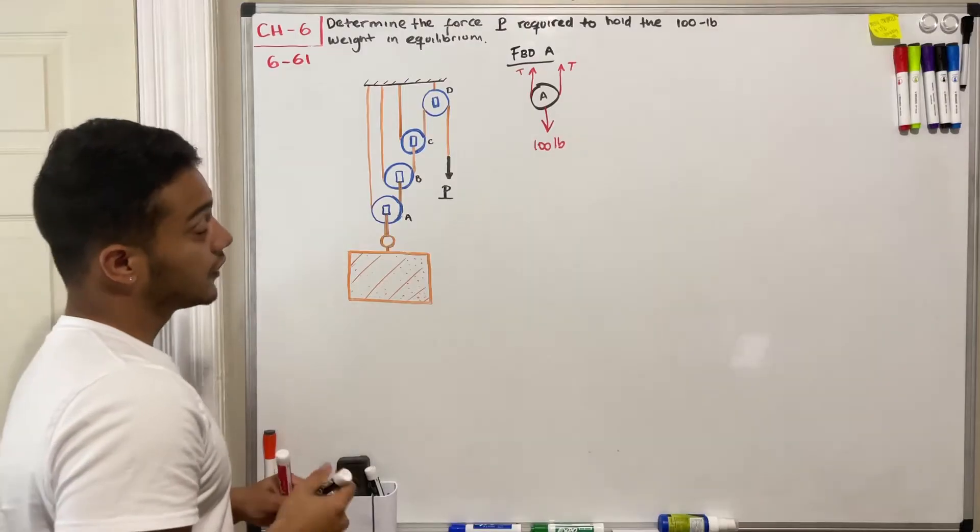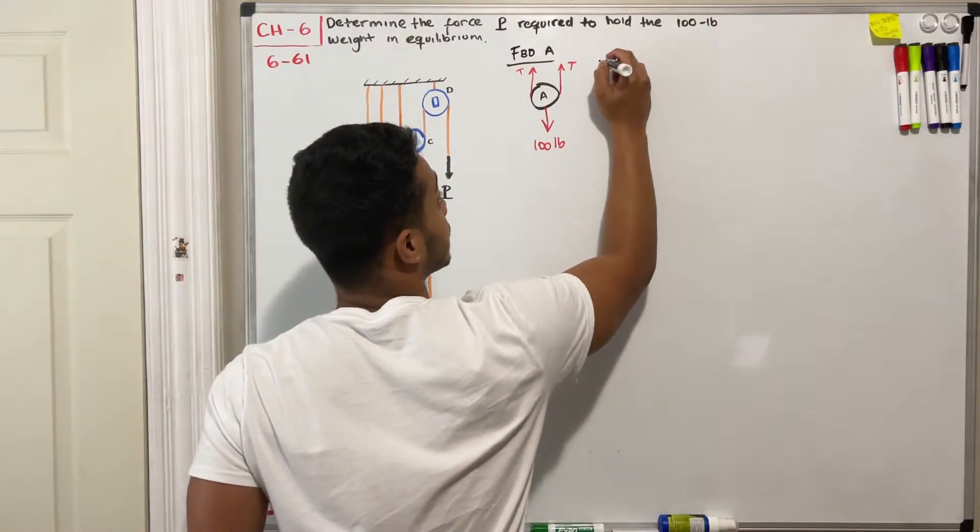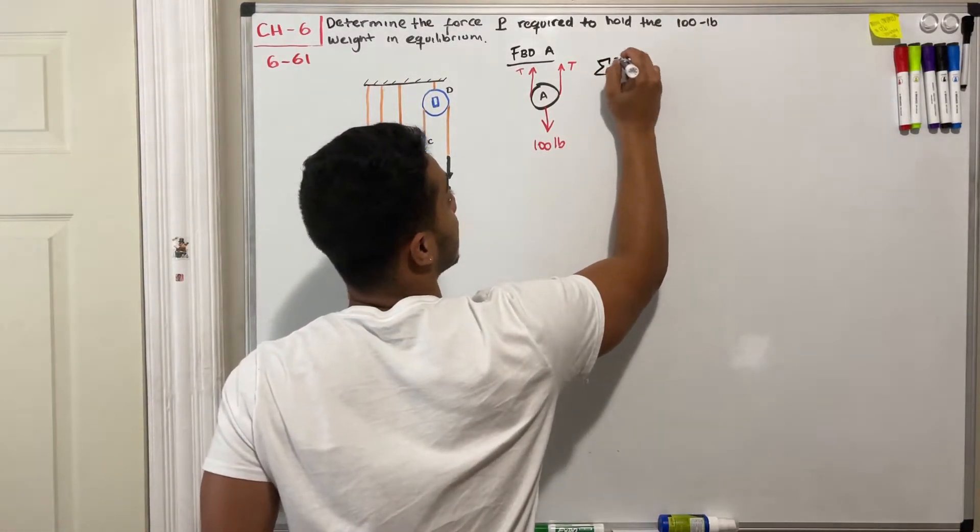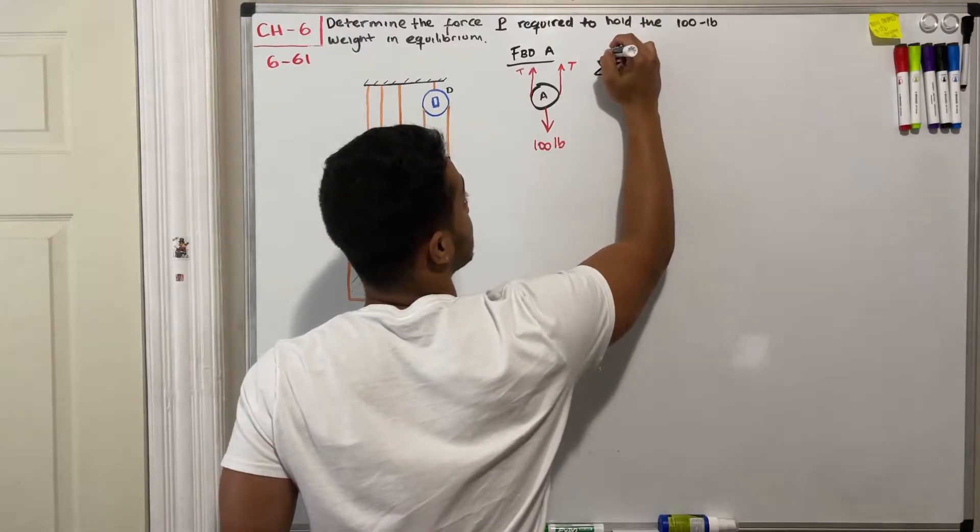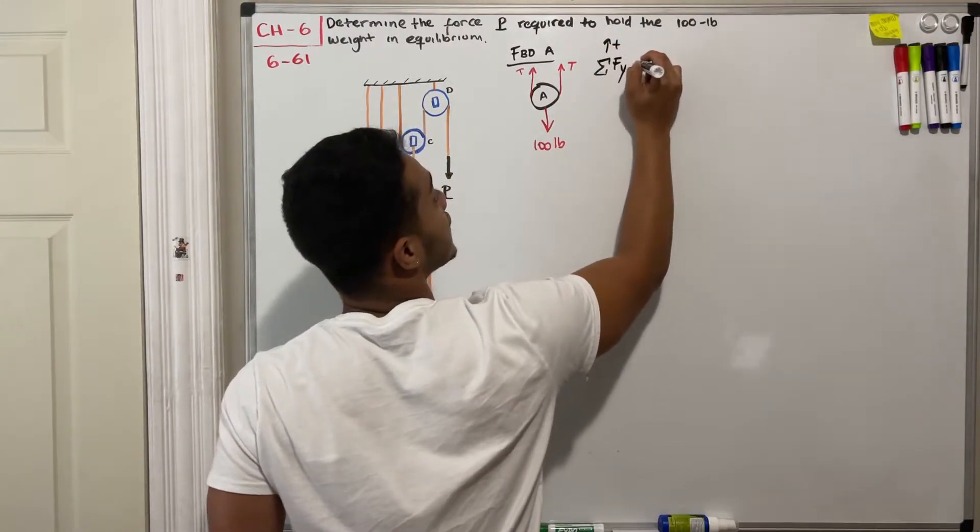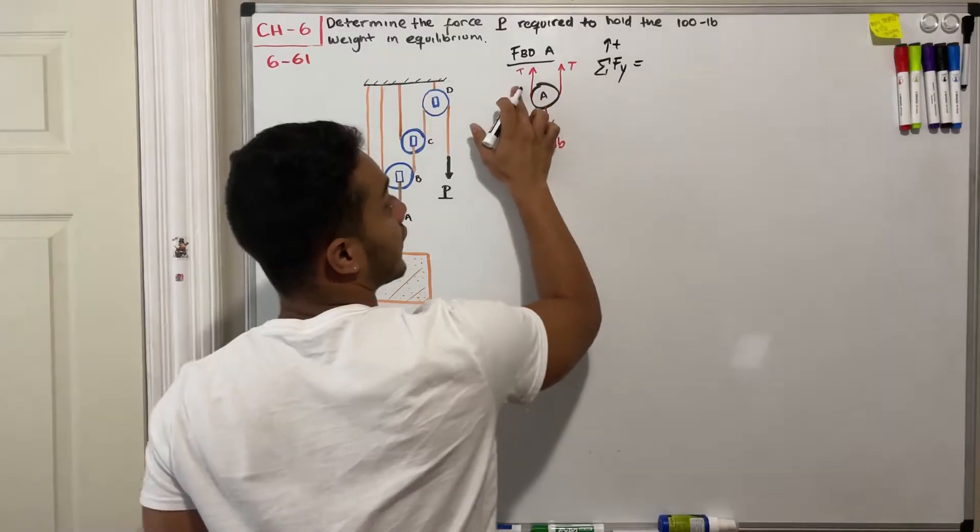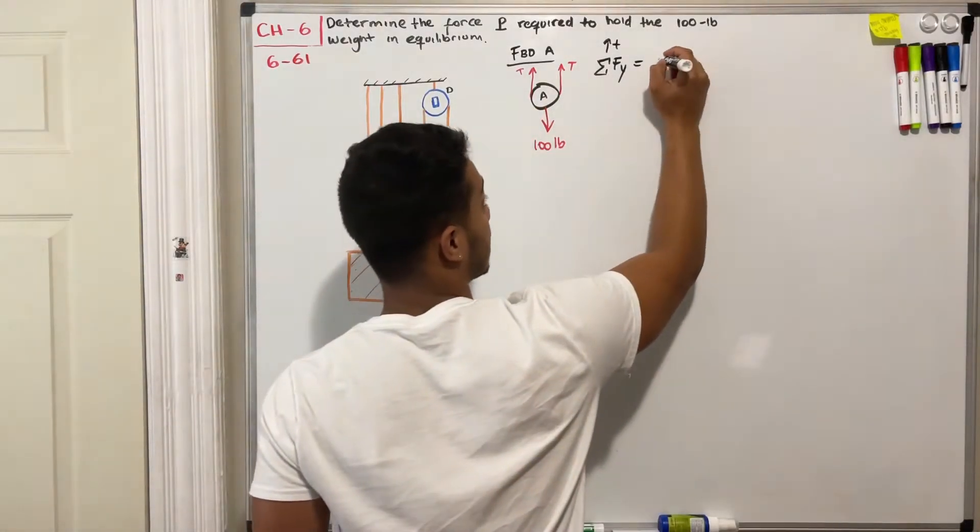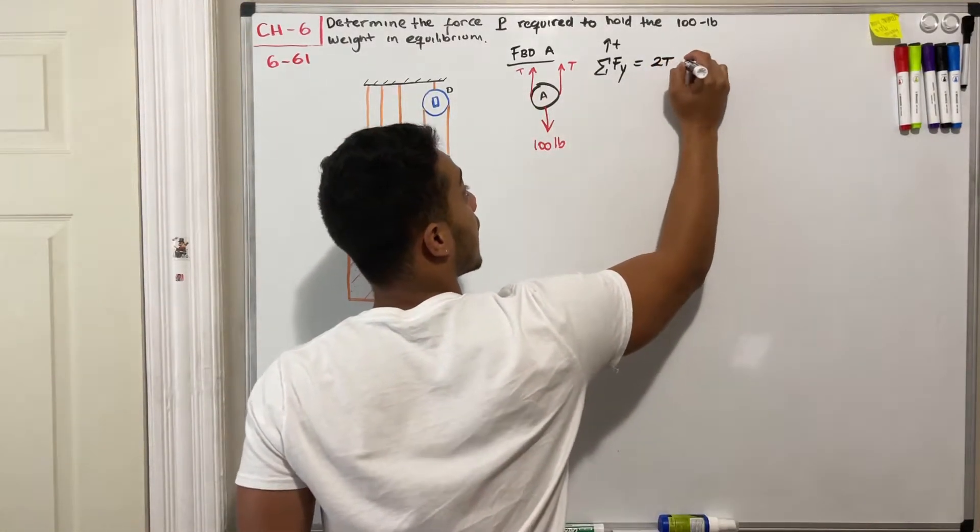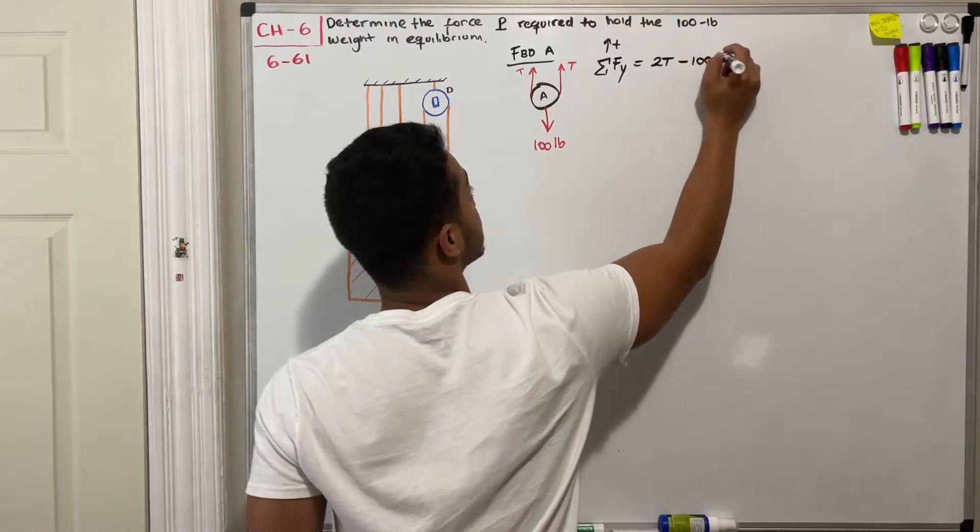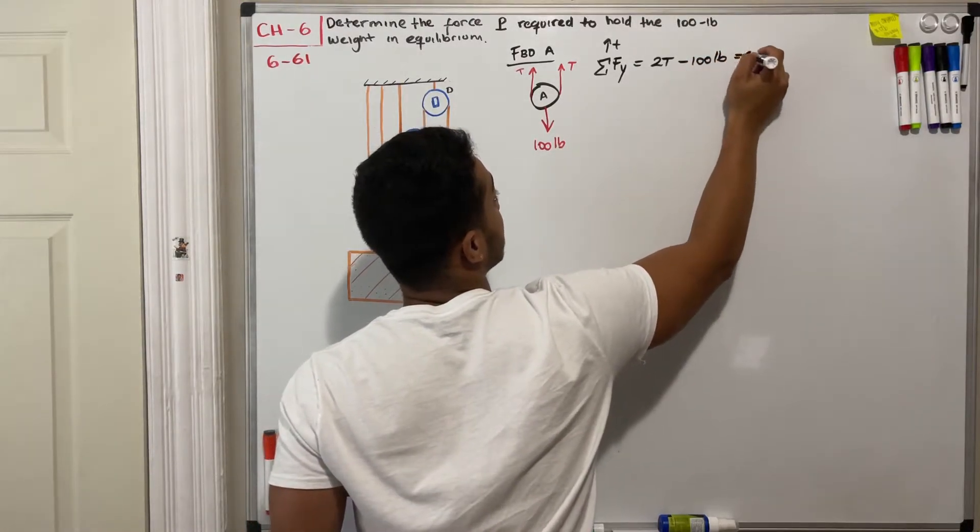After we do this we can apply the sum of forces in the y direction, assuming that going up is positive. What do we have? Well we got T plus T, therefore 2T minus 100 pounds, and this should be equal to zero.